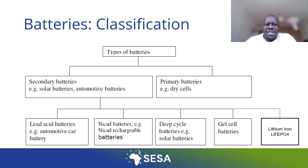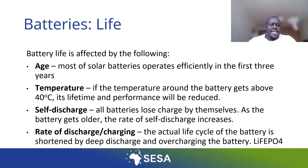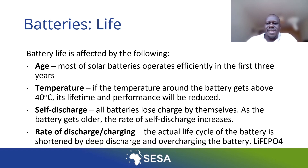Batteries have different classifications as well. We know dry cells, which are used to power torches, but for PV systems we use secondary batteries, especially deep cycle batteries. Nowadays, lithium ion batteries, which last up to 10 years, are on the market, although they are a little bit expensive. The lifetime of a battery is affected by age — if batteries have been there for a long time, they are likely not to perform well. If you put them in temperatures above 40 degrees, you are likely to reduce efficiency. They are also self-discharging, and if you discharge them quite often, their life also becomes a little bit shorter.